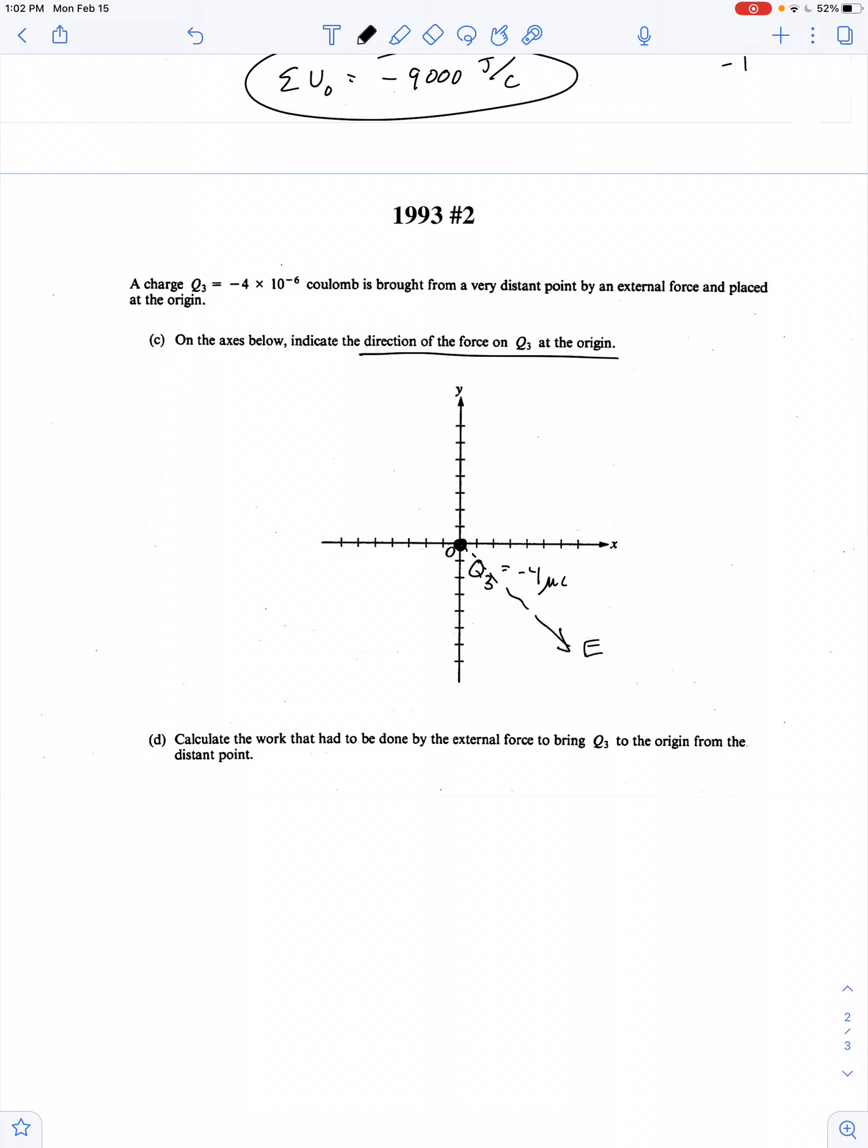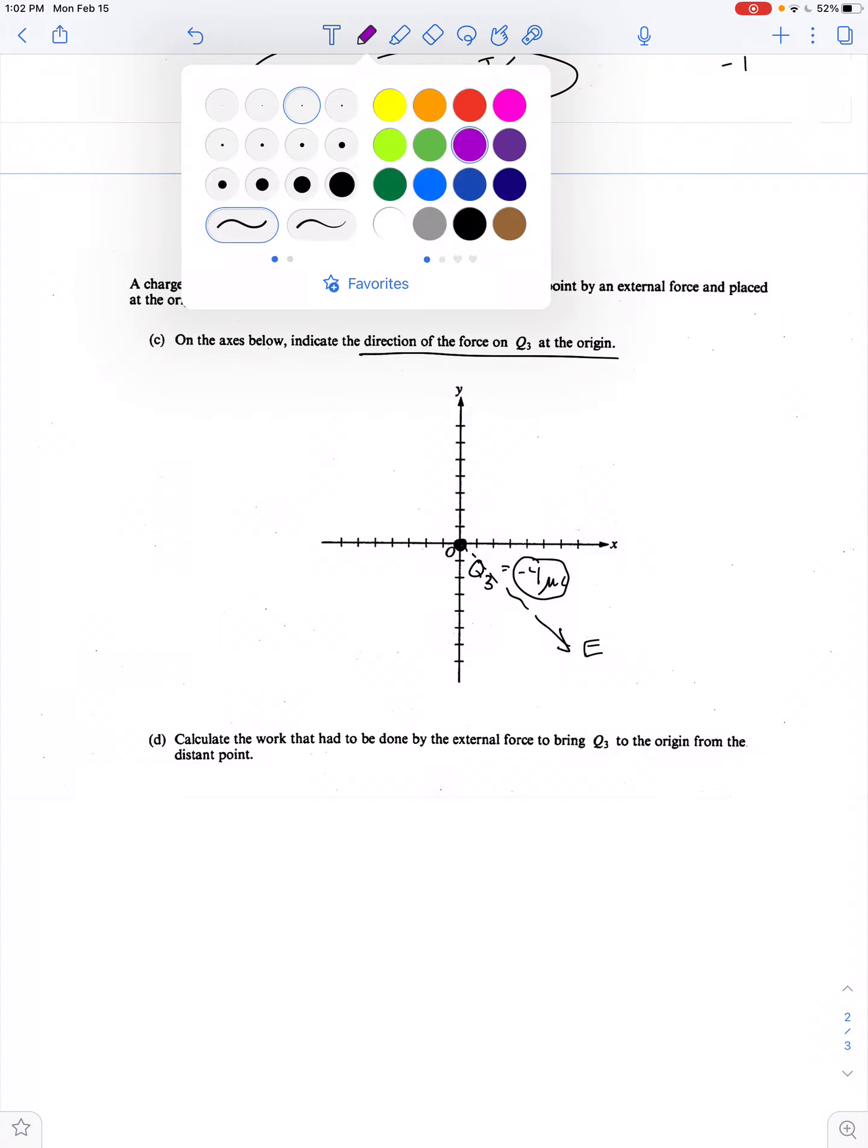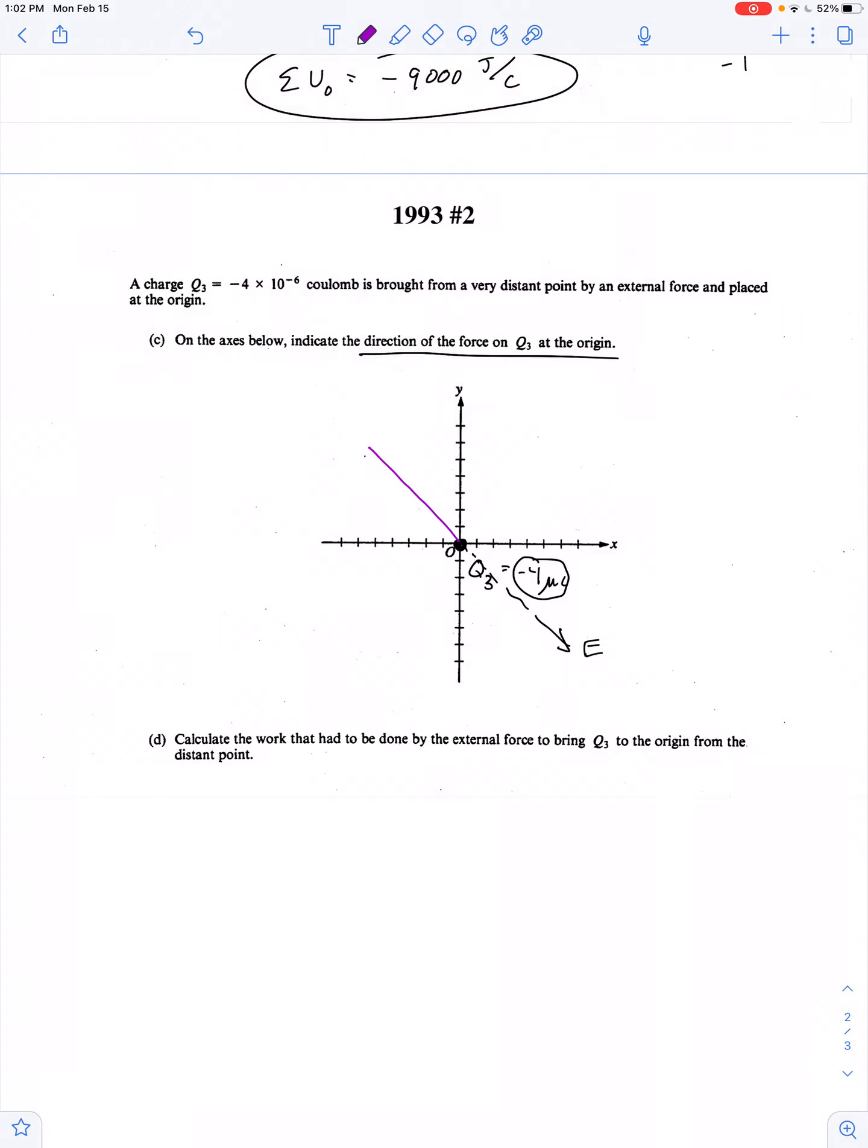Well, the electric field remember pointed down to the right, and because this is a negative charge it experiences a force opposite the direction of the electric field. So there we have it. That's the force on charge number 3.